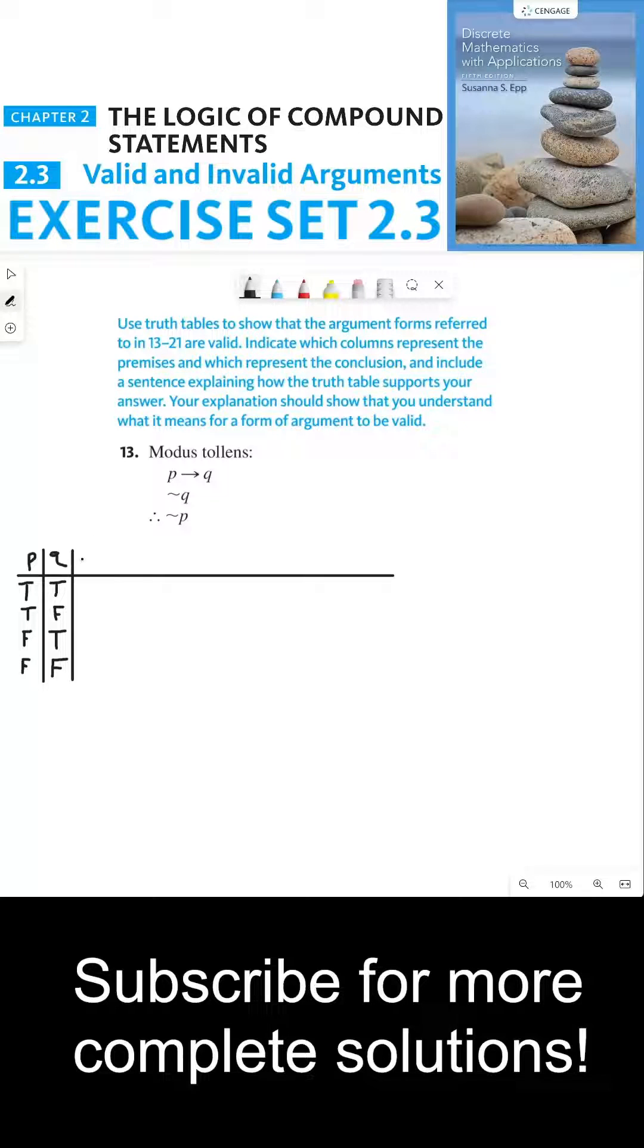Let's start with P implies Q. So P implies Q is false precisely when P is true and Q is false, which is the second line. Every other line is true. Next, we'll do not Q. Lastly, we'll do not P.